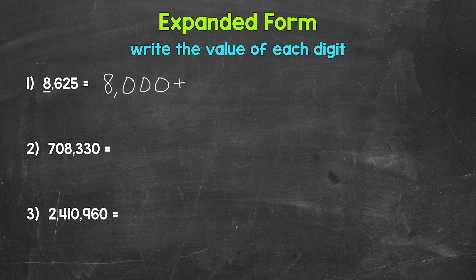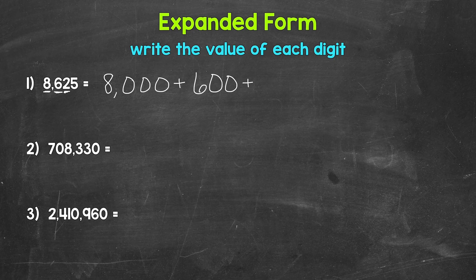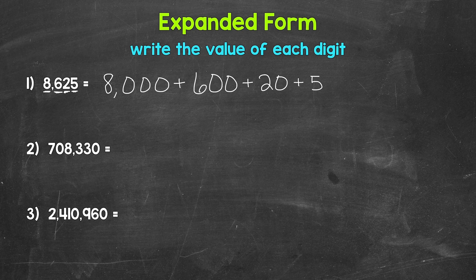Now moving to our next digit, so we are moving right. We have a 6. This 6 is in the hundreds place, so the value of the 6 is 600. So we can put 600 plus. Our next digit is a 2 in the tens place, so that 2 has a value of 20 plus. And then lastly, we have a 5 in the ones place. This 5 has a value of 5. And that's it — that's 8,625 in expanded form.